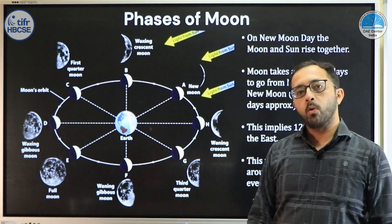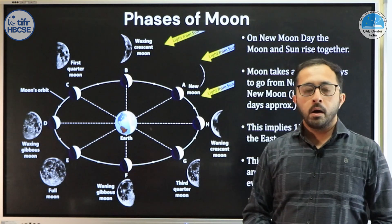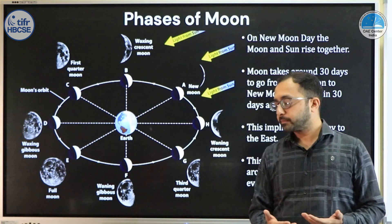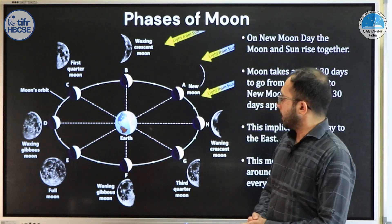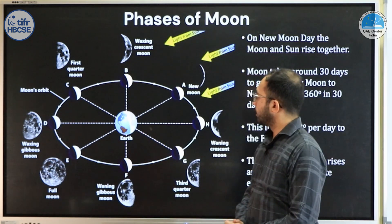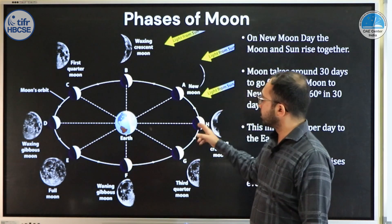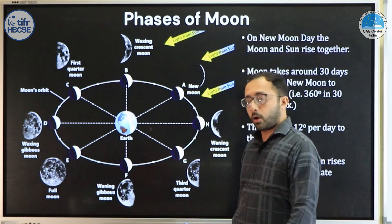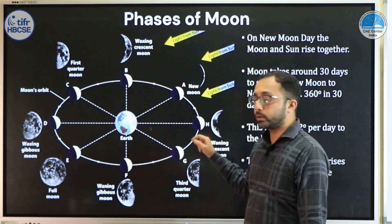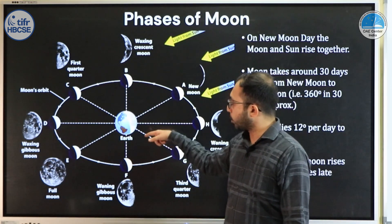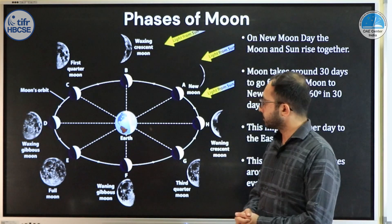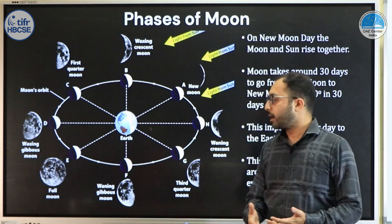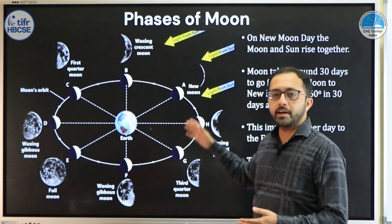Let us now talk in detail about why we see the phases of the moon, when we see the moon in the sky, and a few intricacies of this motion. On this side of the screen you see the earth at the center, and the moon's orbit with the moon shown at various places in the orbit. Viewing from the top, the moon goes anticlockwise around the earth, and the earth also rotates anticlockwise. The sun is located at the top right and is considered to be at a very far distance.